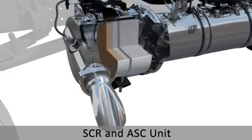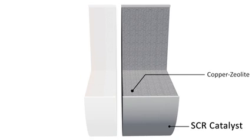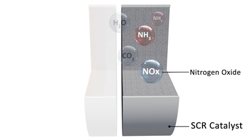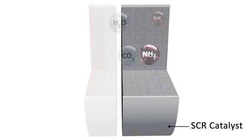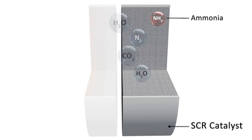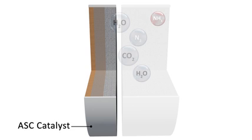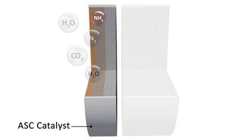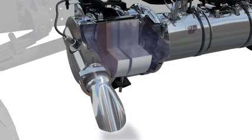SCR and ASC unit. SCR catalyst is made of copper zeolite material. In this chemical reaction, the reduction is selective, meaning that out of all exhaust gases produced, only nitrogen oxide is reduced. The ammonia reacts with nitrogen oxide and is converted into nitrogen and deionized water. Any ammonia that does not take part in the conversion of nitrogen oxide flows toward the ASC, which is an integrated part of the SCR. ASC has a double layer coating: the first layer is an SCR catalyst made of copper zeolite material, and the second layer is an oxidation catalyst made of platinum-based material. It reduces excessive unused urea from dosing, and platinum absorbs the excess ammonia. Ammonia is a colorless, toxic gas and is oxidized to nitrogen and water, which are then released through the vehicle tailpipe.